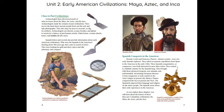Clues to past civilizations: Archaeologists have discovered much of what we know about the Maya, the Aztec, and the Inca. Archaeologists study the remains of past civilizations. They survey the land where ancient people lived, test the soil, and take photographs. They also map out areas to excavate or dig for artifacts. Archaeologists use shovels, scoops, brushes, and sieves to search for evidence of past human activity. Flaked stone, ceramic shards, bones, and textiles all tell a story.